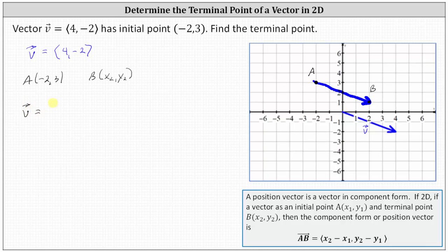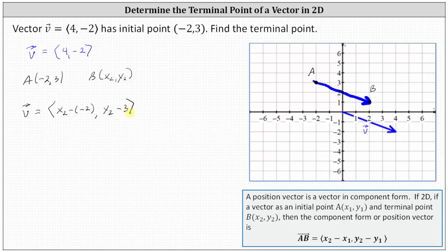And if we write vector v in component form, we know vector v must have an x component of x sub two minus negative two, and a y component of y sub two minus three, which must be equal to vector v in component form, which has an x component of four and a y component of negative two.